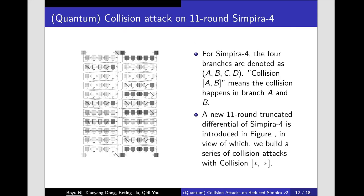For Simpira-4, the four branches are denoted as A, B, C, D. Collision AB means the collision happens in branch A and B. A new 11-round differential of Simpira-4 is introduced in figure, in view of which we built a series of collision attacks with any two branches.